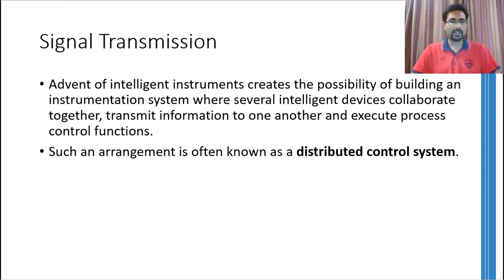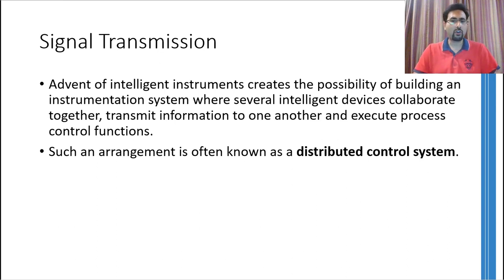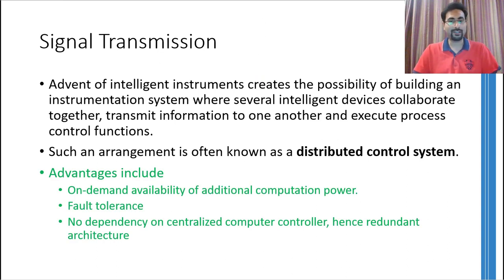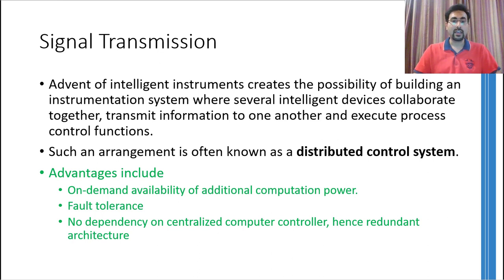Such a scenario is known as a Distributed Control System, or DCS for short. This kind of system doesn't have any central processing unit, but what is happening is that all the devices are performing some kind of processing and they are modifying the signal before routing it to any other device that needs that information. The main advantage of using a Distributed Control System is that you can easily add more computational power into the whole system without disturbing it.